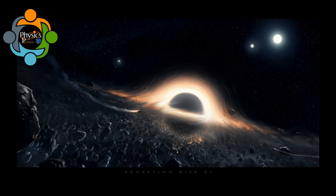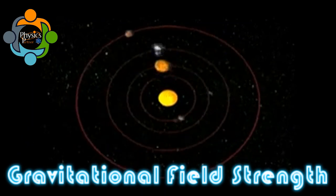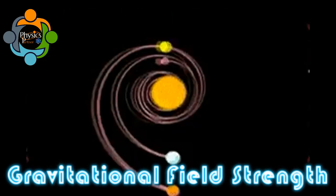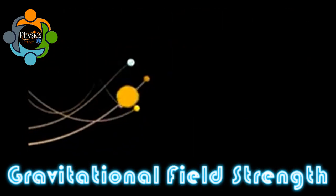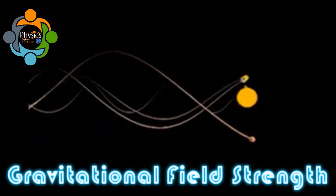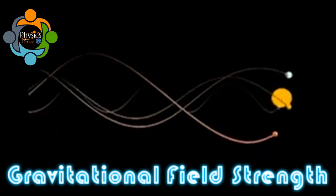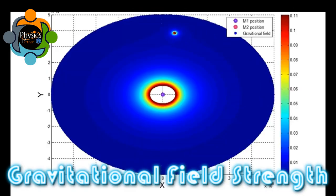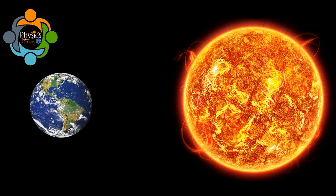The accretion disk forms when diffuse material is attracted to a massive central body, like a black hole. Moving to the second part of the video: gravitational field strength. The gravitational field strength at a point describes how strong or weak a gravitational force is at that point.